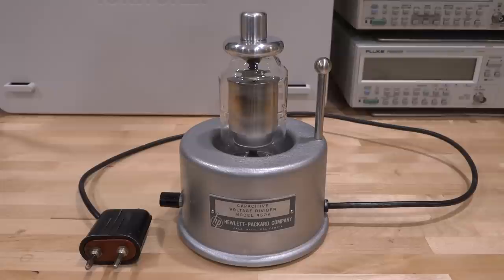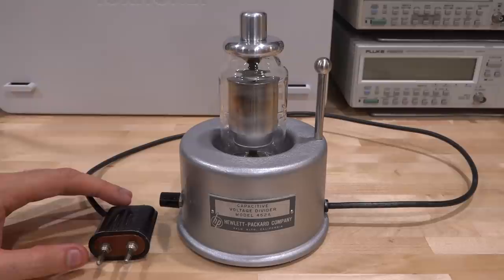If you guessed a capacitive voltage divider, you would be correct. This is an HP model 452a, and its job is really simple: divide an incoming AC signal by a predictable ratio using capacitive division. I'll talk about the theory in just a second. The idea is that you have a very high voltage AC signal coming in and you want to divide it down so you can connect it to something that can measure regular low AC signals at much lower value.